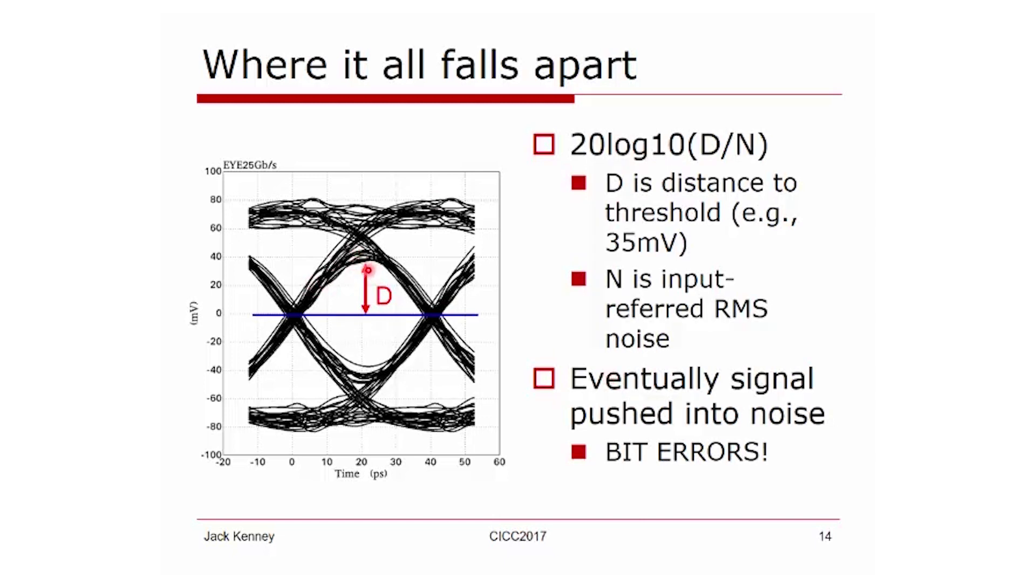What happens here is that now the inner eye opening is down to 30 millivolts because all we've been doing is attenuating.